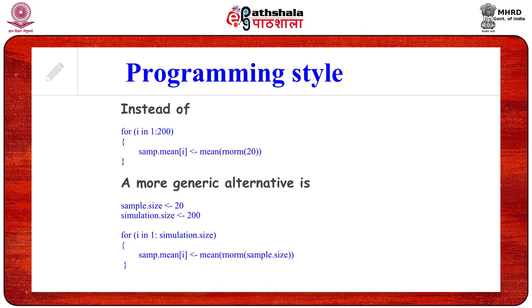Now here comes the idea of making a program as generic as possible. Consider this example: the objective is to get the mean of 200 simulated samples each of size 20. This program looks good and serves its purpose, but if you look at it after six months or a year you may find yourself lost — you might not understand what the sample size and simulation size are. In the improved version, we specify the sample size and simulation size separately, so with minimum effort we can understand everything about the program even after a substantial amount of time.